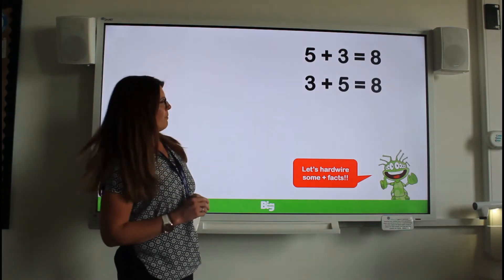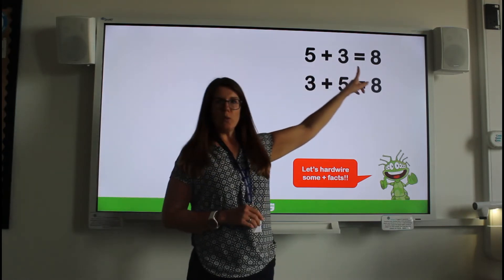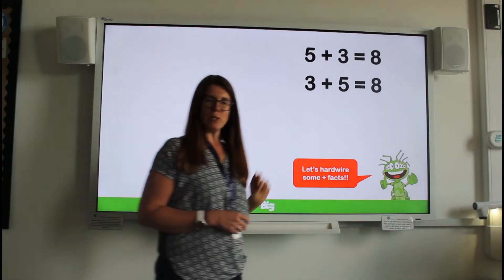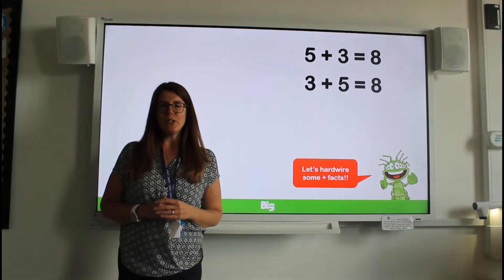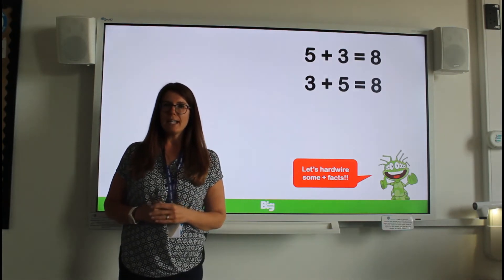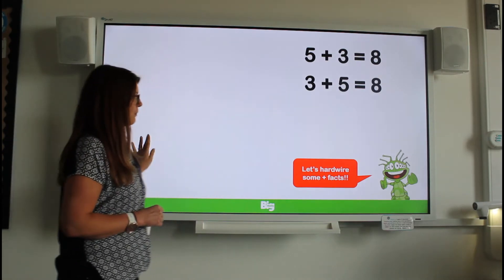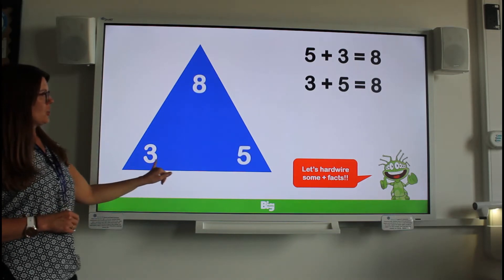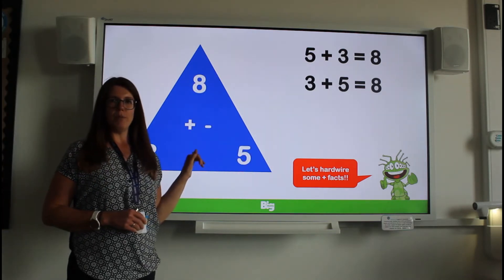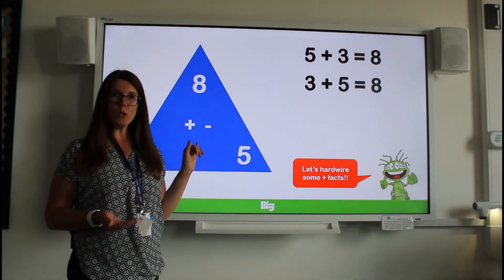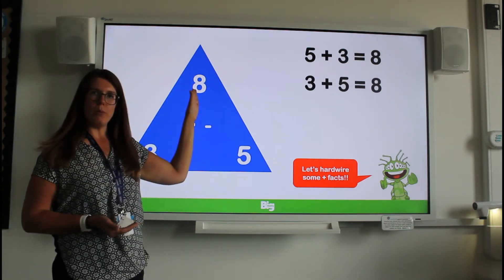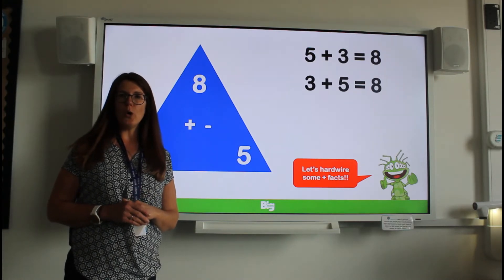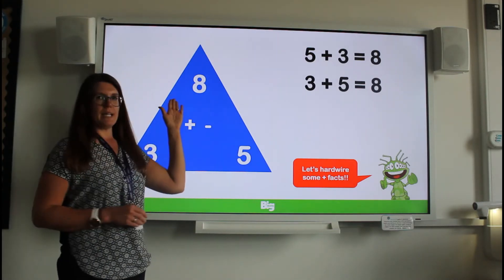Here's the calculation we had earlier: five plus three equals eight, and its switcher, three plus five equals eight. We can put those numbers into a fact family triangle. We put the switchers at the bottom and the sum or the total at the top. The biggest number in our fact family triangle always goes at the top.